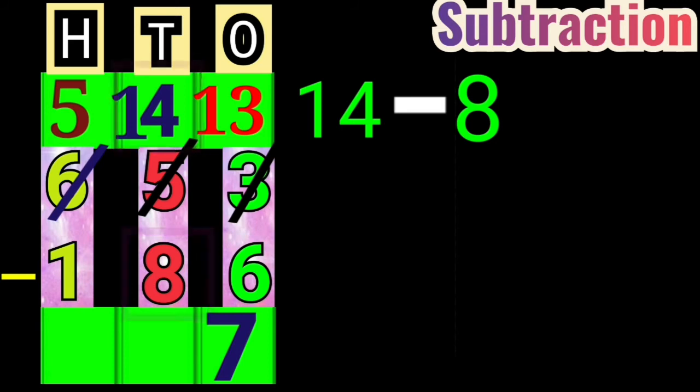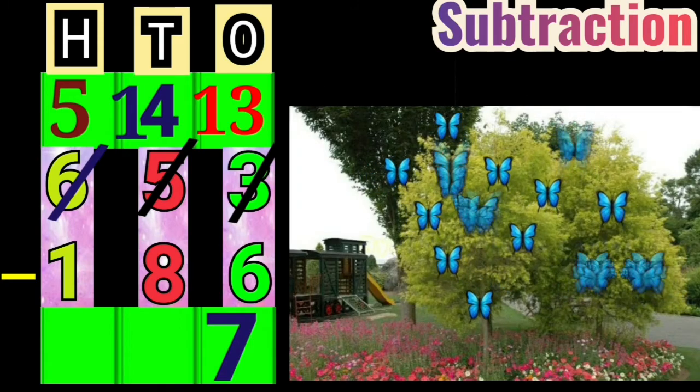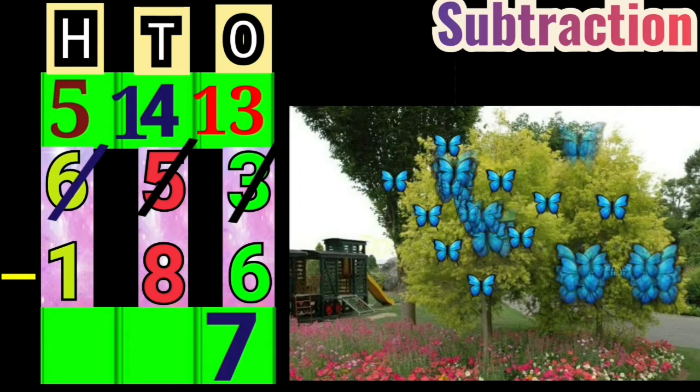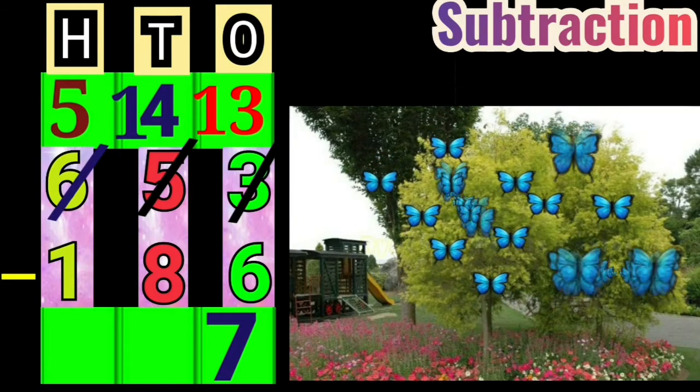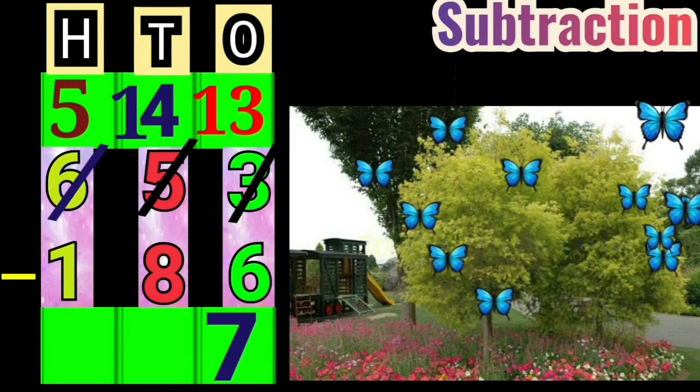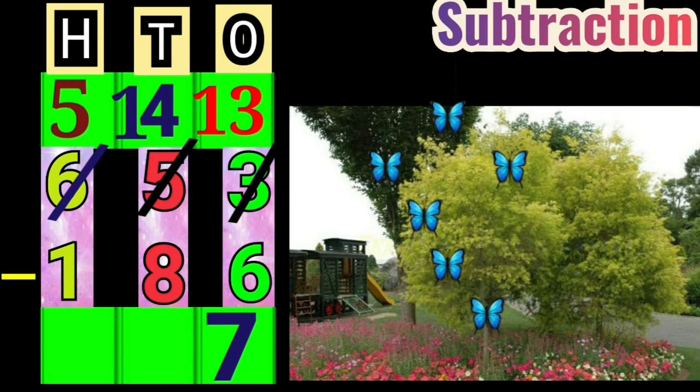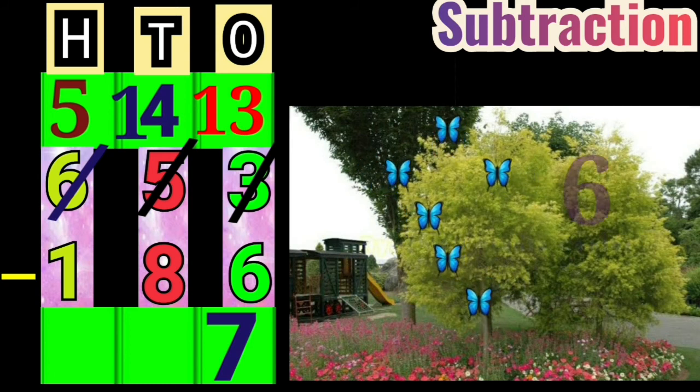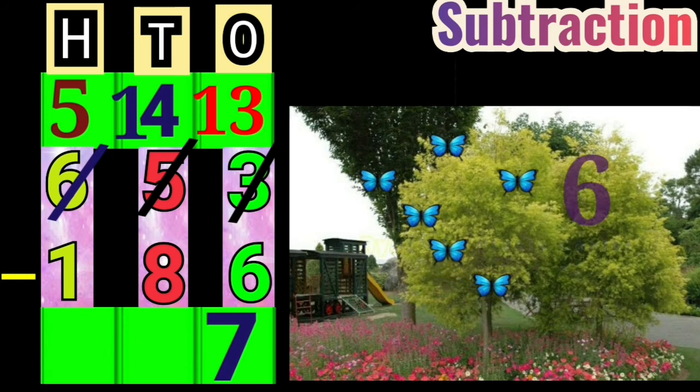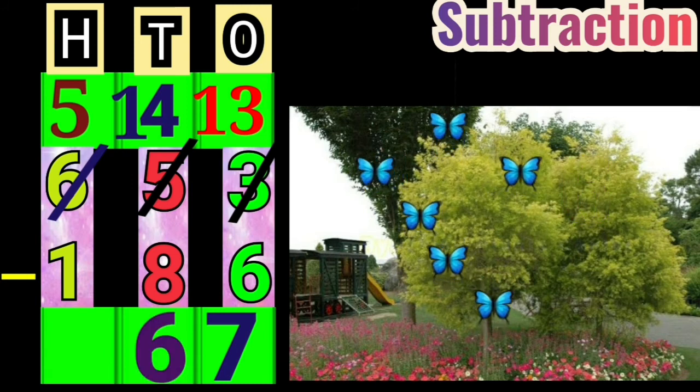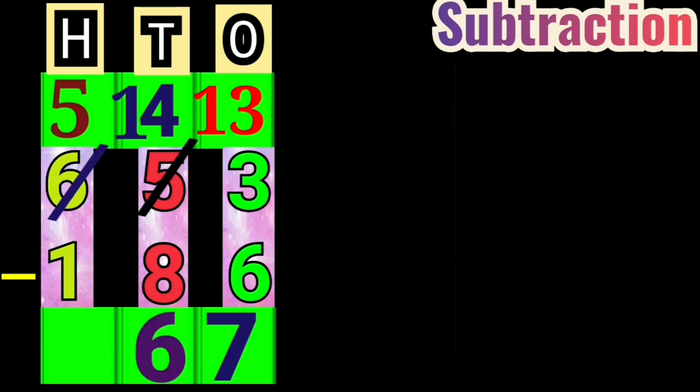Now, 14 minus 8 is how much? We will subtract this with an example. There are 14 butterflies on a tree. After some time, 8 butterflies fly away. Now, how many butterflies are left on the tree? Yes, very good, there are 6 butterflies left on the tree. Now, write down 6 in the 10th column.